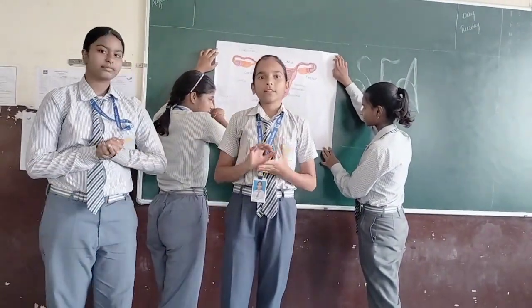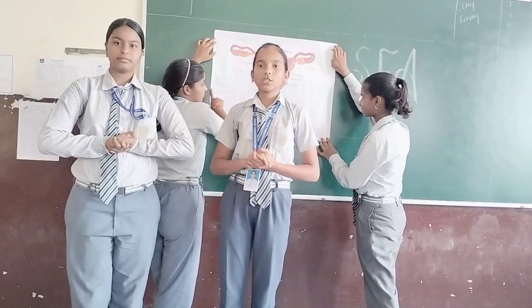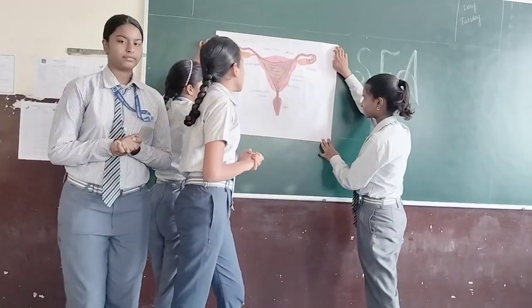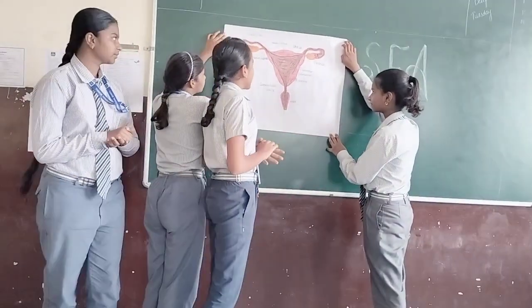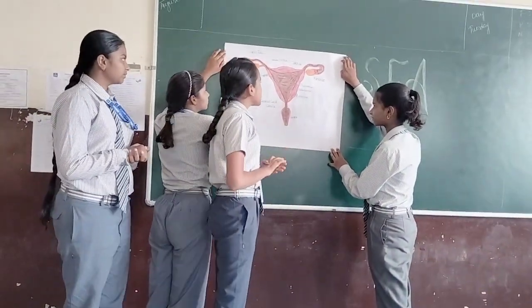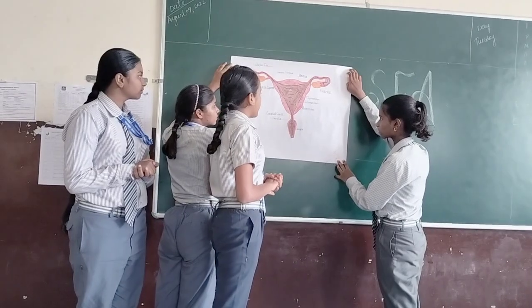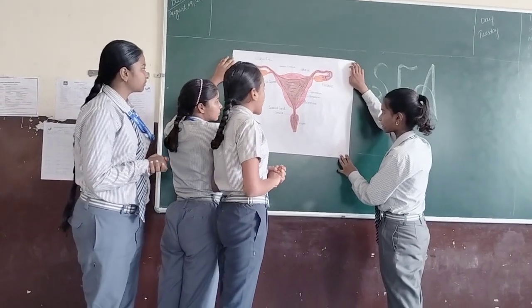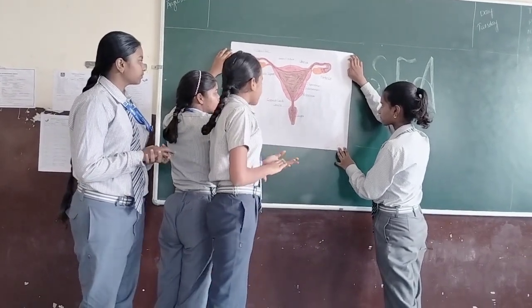The Female Reproductive System consists of 12 parts: Uterine fundus, Uterus, Fembre, Myometrium, Atrium, Perimetrium.